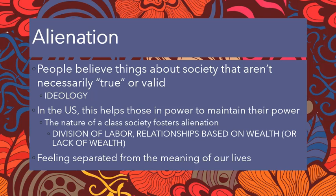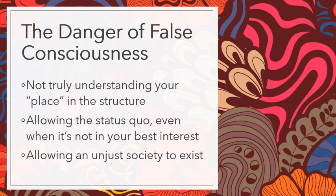Marx felt that alienation was an extremely important concept for people to understand. Along with alienation come two more of Marx's concepts — false consciousness and class consciousness. In an industrialized, urban society, Marx asserted that we live in a state of what he called false consciousness.